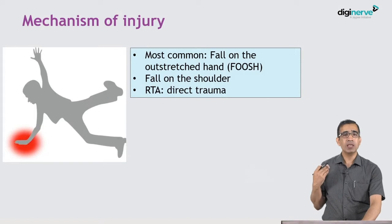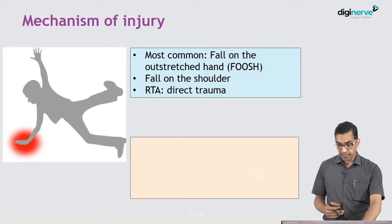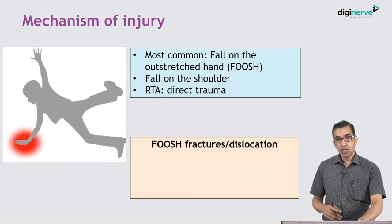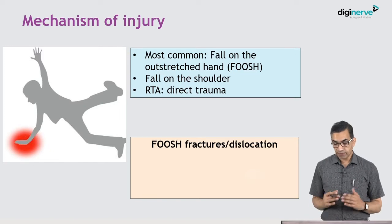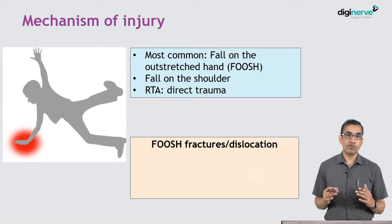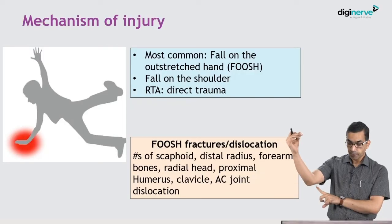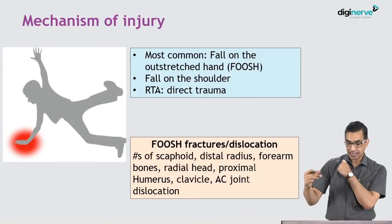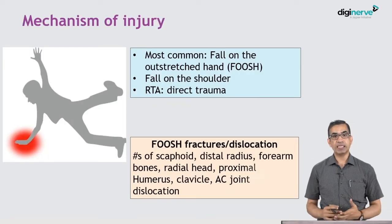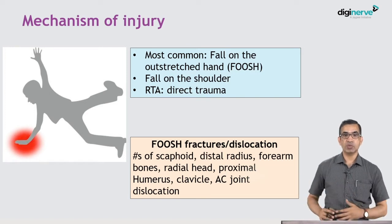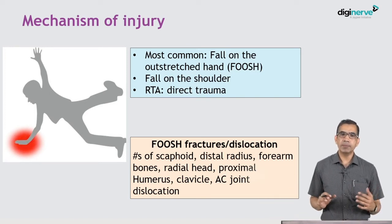Rarely it could be direct trauma during road traffic accidents. Beyond this, there are fractures which are very commonly associated with fall on the outstretched hand: fractures of the scaphoid, distal radius, forearm bones, radial head, supracondylar fractures of the humerus, proximal humerus, clavicle, and acromioclavicular joint injuries. These are the fractures which are very common in the upper limb due to fall on the outstretched hand. This table is often asked in MCQs.